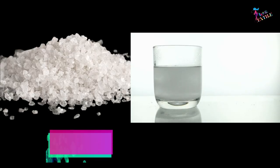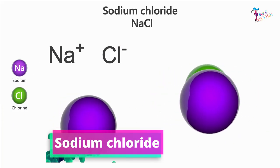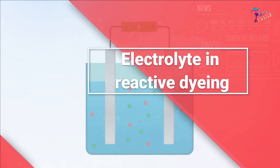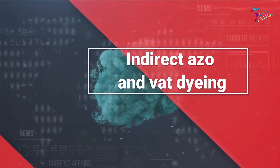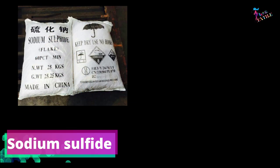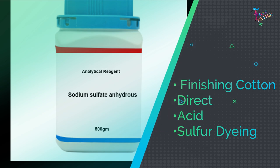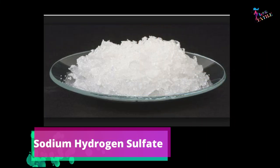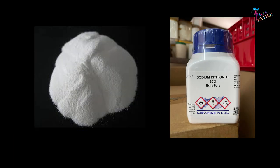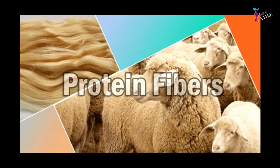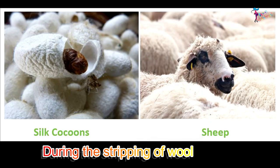Salt. Different types of salts are used in different processes for different purposes of textile dyeing and finishing. Sodium chloride is widely used as an electrolyte in reactive dyeing. Sodium nitrate is used for azoic color dyeing and diazotization, and also used in direct and vat dyeing. Sodium sulfite is used as a reducing agent for the preparation of sulfur dye. Sodium sulfate is used for finishing cotton, and in direct, acid, and sulfur dyeing. Sodium hydrogen sulfate is used to remove chlorine from silk and wool after bleaching. Sodium dithionate is used in vat dyeing and washing of protein fiber. Sodium acetate is used in wool dyeing with direct and acid dyes, and also during the stripping of wool and silk.